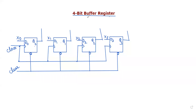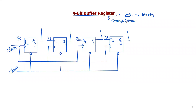Hello guys, in this video I will explain about a 4-bit buffer register. A register is one type of sequential circuit which is used to store binary data with 4 bits. We can understand the register as a storage device — it can store binary data with 4 bits.